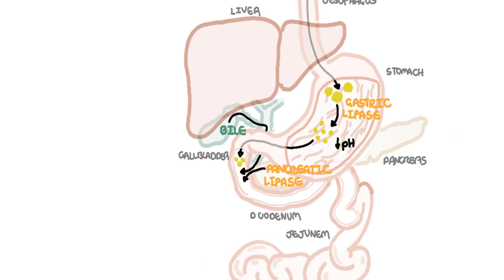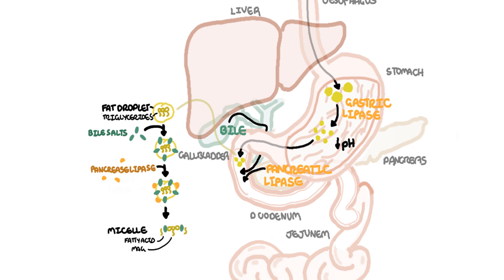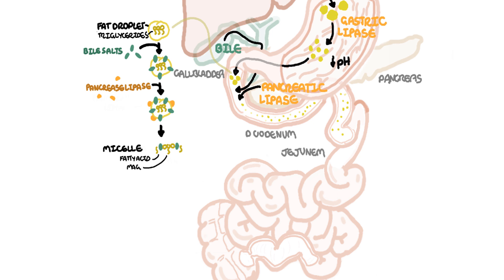So let's put it all together and look at the lipids that have just entered the small intestine and are going to be exposed to the bile and the pancreatic enzymes, specifically lipase. Bile — specifically bile salts — help with emulsification of lipids, basically coating them, and this allows for digestion by the pancreatic lipases. Pancreatic lipase will help break down the triglycerides further into fatty acids and monoglycerides, and help form what we know as micelles.